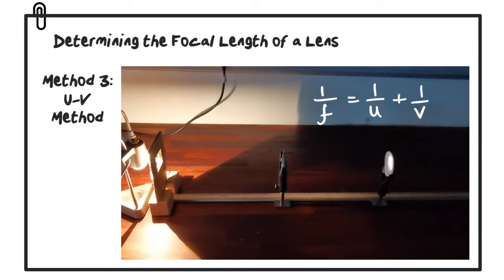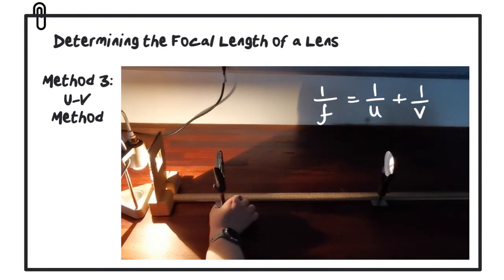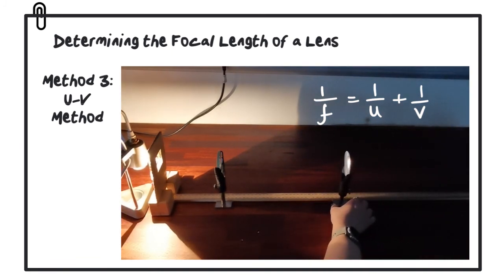For this experiment, for a range of different values of object distance u, we measure the corresponding value for v, and from that we can calculate the focal length. There is a whole separate video that describes that method from start to finish.